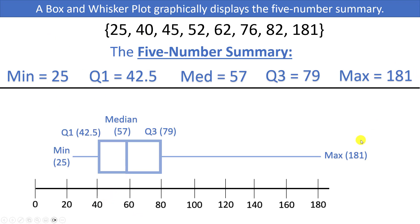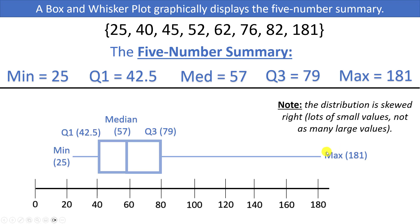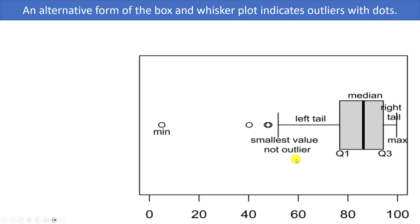You can tell the distribution shape to some degree from a box plot, although it's not quite as easy as with a histogram. A skewed right distribution has most values clumped toward the lower end and tails off toward the right — which is what we have here, with values clumped toward the left and tailing off to the right. So this is somewhat of a right-skewed distribution.